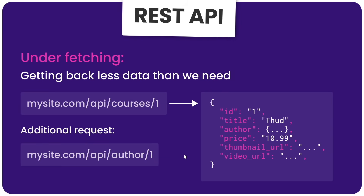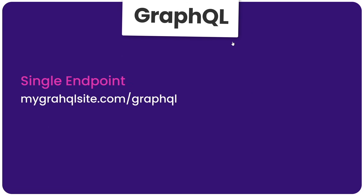Now let's look at how GraphQL works and how it combats both overfetching and underfetching. When we send a request using GraphQL to a server, we typically do that to a single endpoint — something like /graphql. This is totally different from a REST API, where each resource typically has its own set of endpoints for GET, POST, DELETE, and PUT requests. Whenever we send a query using GraphQL to the server, it's always sent to that single endpoint and the server can handle it.